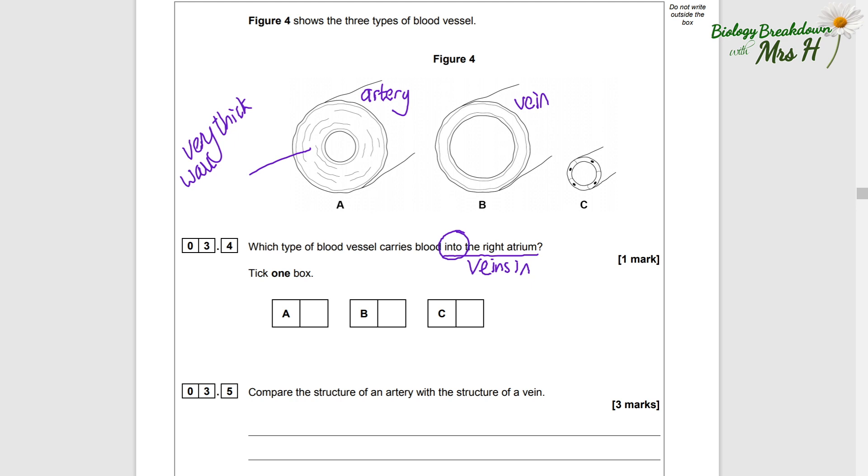And B is a vein - it's about the same overall diameter of an artery, but it has a much wider lumen, that's the hole that the blood moves through, and a thinner wall. So thinner elastic tissue and muscle. And then C is very tiny, it's only one cell thick, so we know that's the capillary. The answer to 3.4 is B.